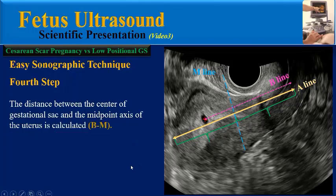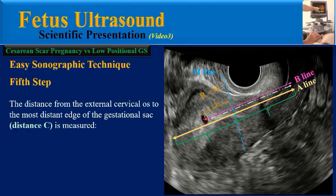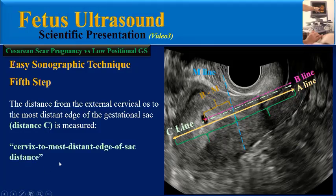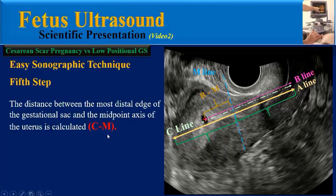The distance between the center of the gestational sac and the midpoint axis of the uterus is also calculated. In the fifth step, the distance from the external cervical os to the most distant edge of the gestational sac is measured — distance C, or C line — which is named the cervix to most distant edge of sac distance. The distance between the most distal edge of the gestational sac and the midpoint of the uterus is calculated, named CM distance.